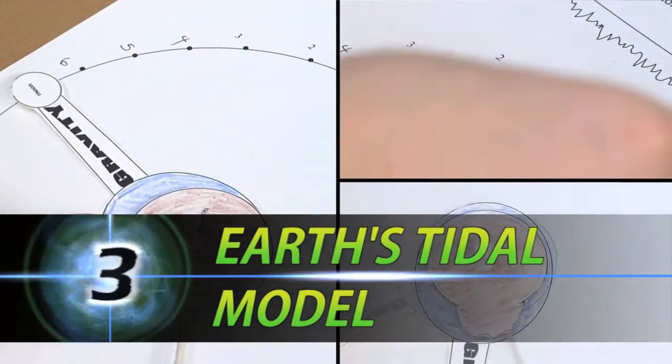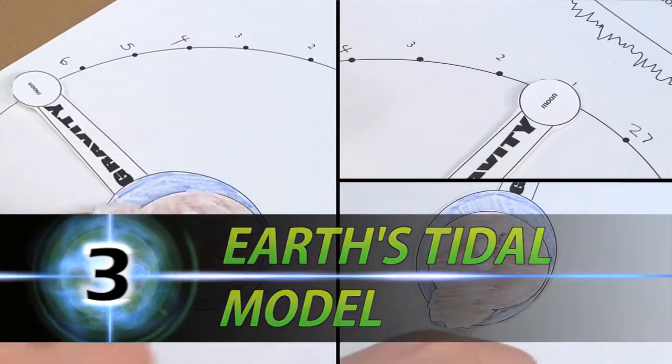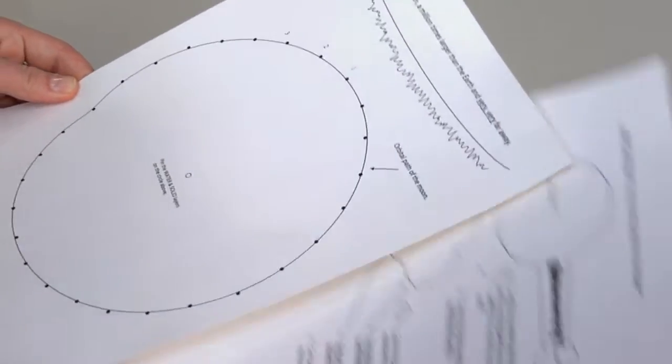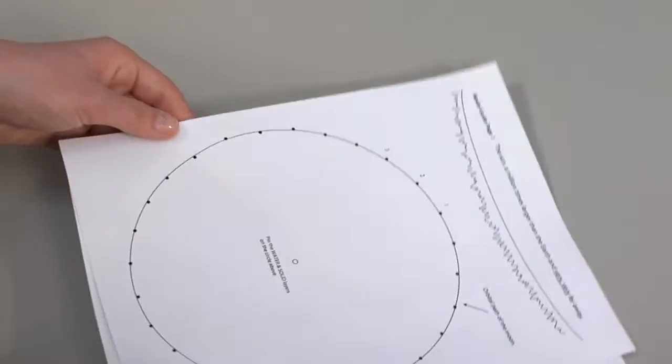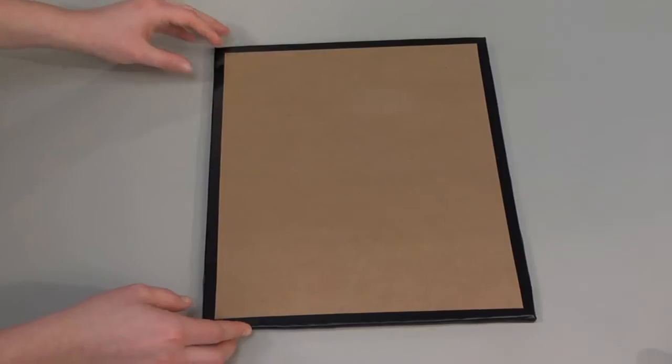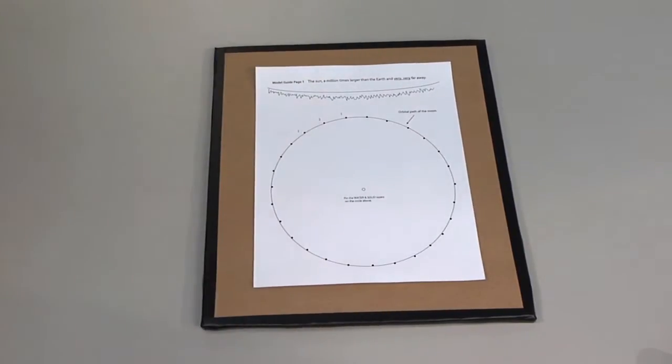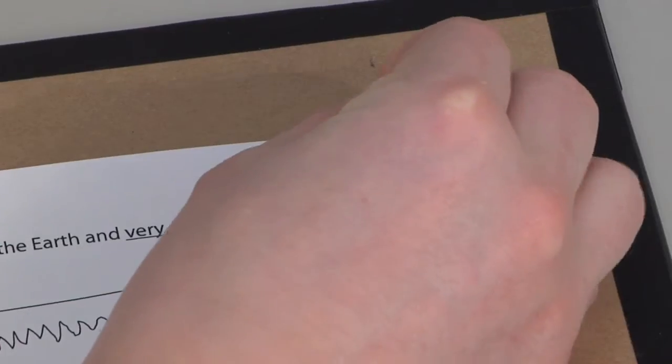Understanding how Earth's tidal bulges produce daily high and low tides. Prepare a photocopy of the model guide using white cardstock or very heavy paper. Cut two pieces of cardboard and tape them together to use as a platform for the tidal model. Secure the corners with pushpins.